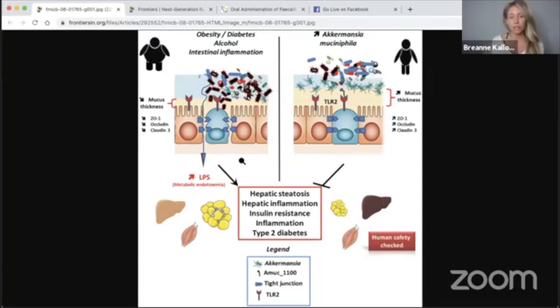This showed those with obesity, diabetes, alcohol, or intestinal inflammation actually had a reduced level of Akkermansia and decreased mucus thickness.